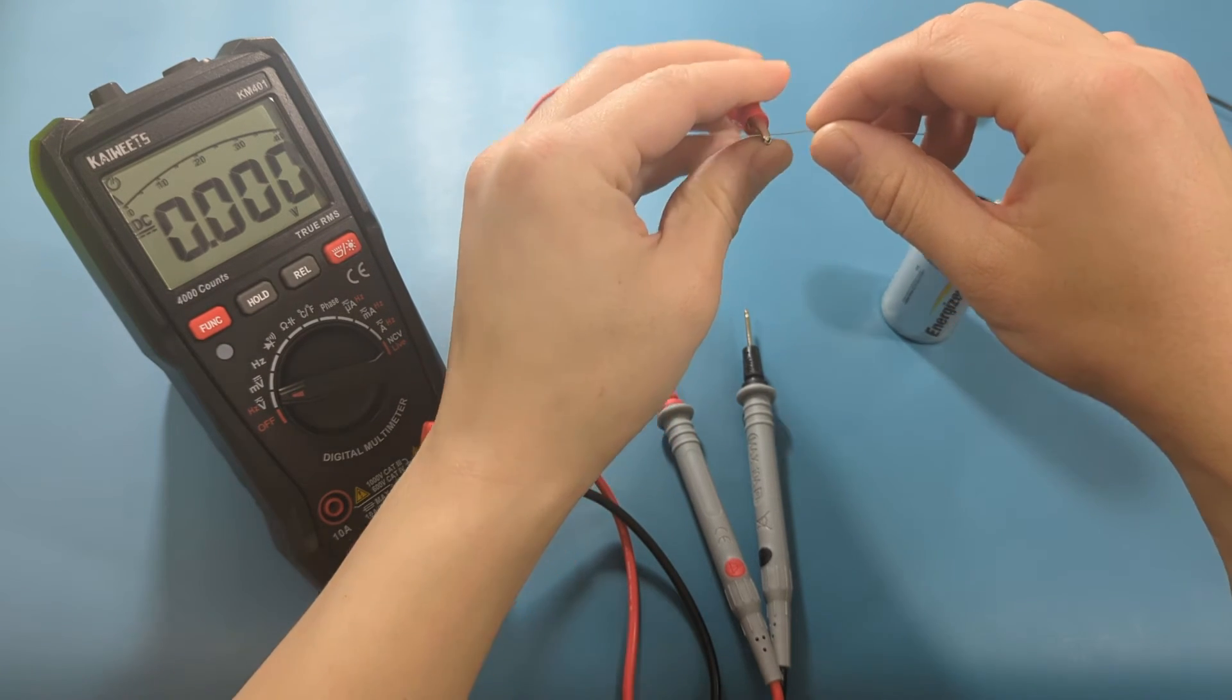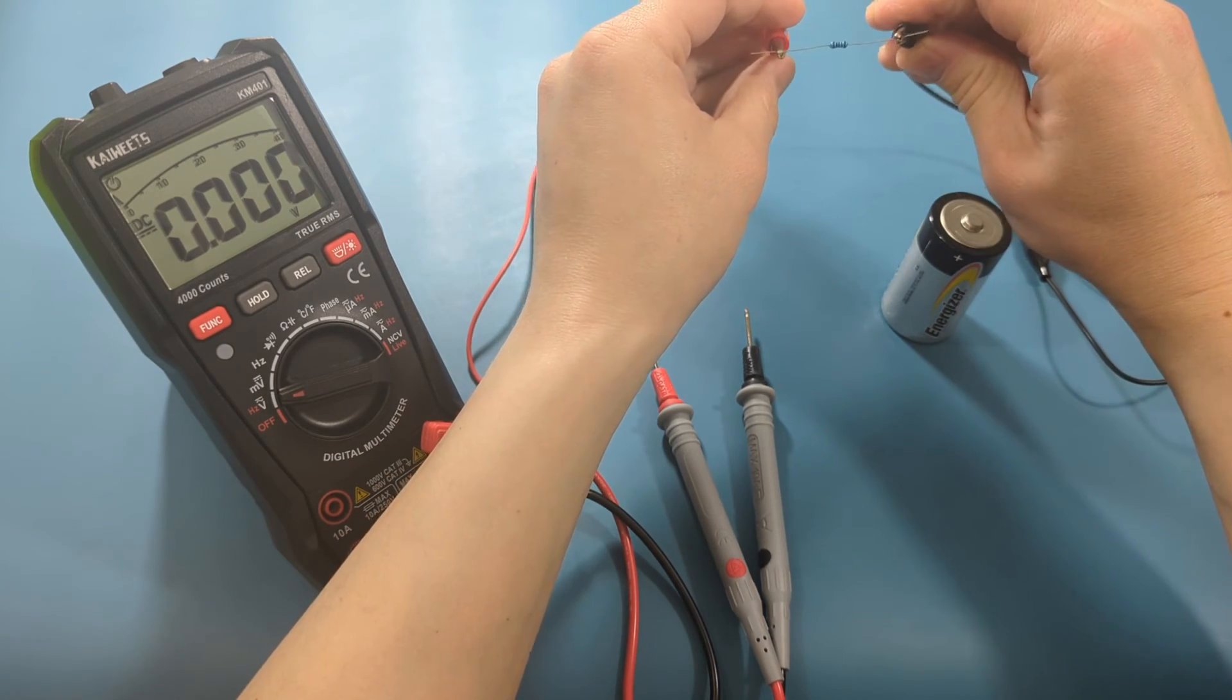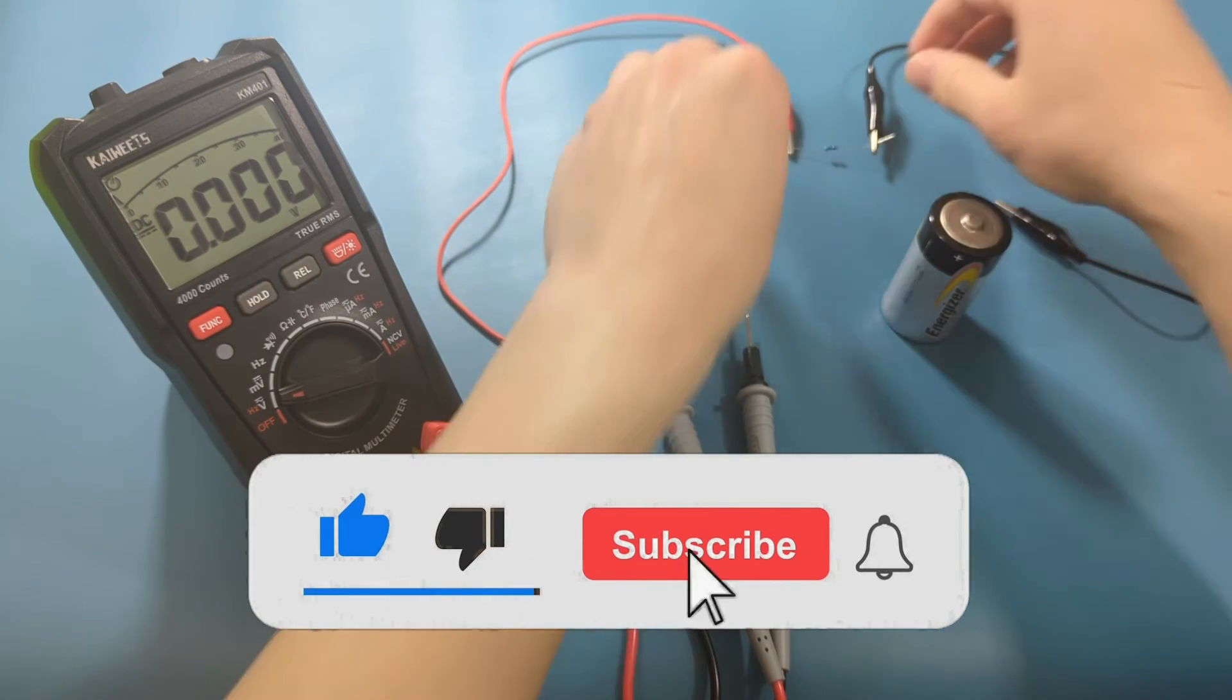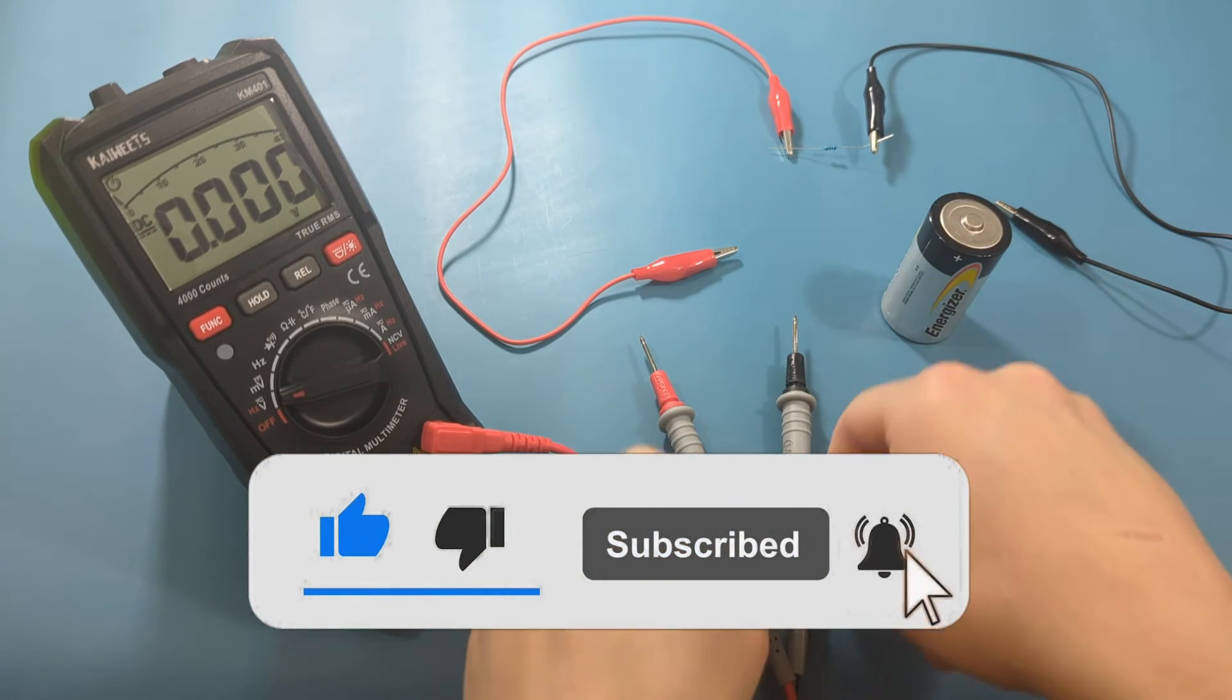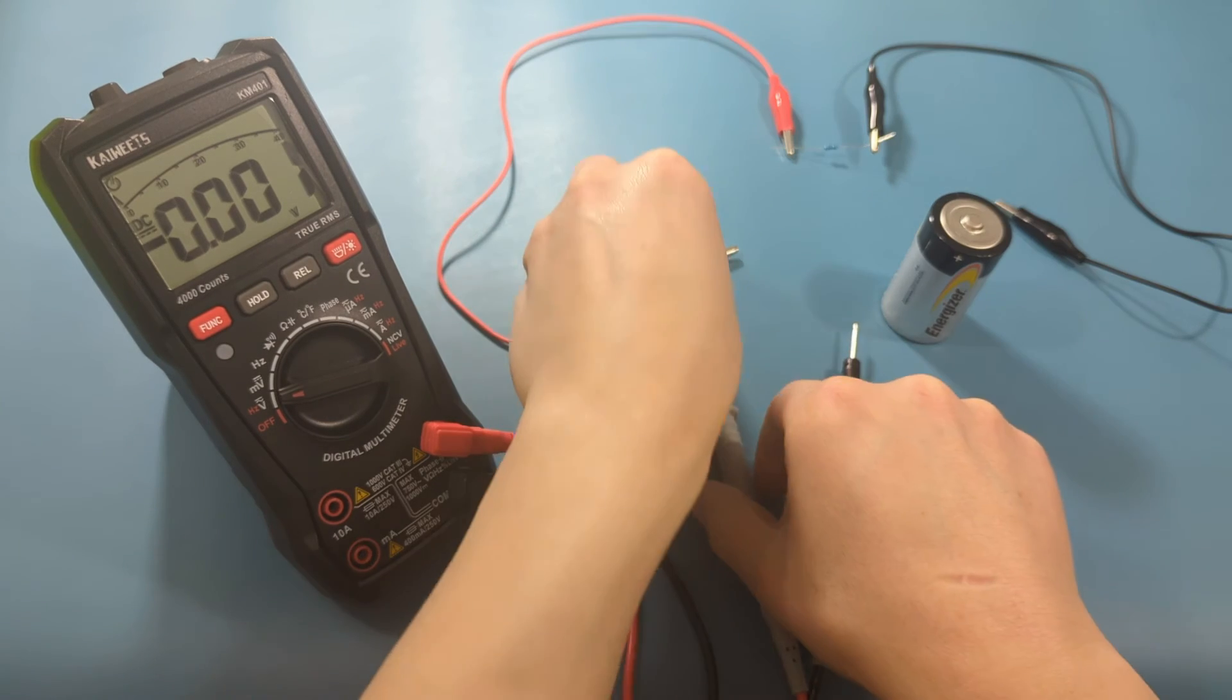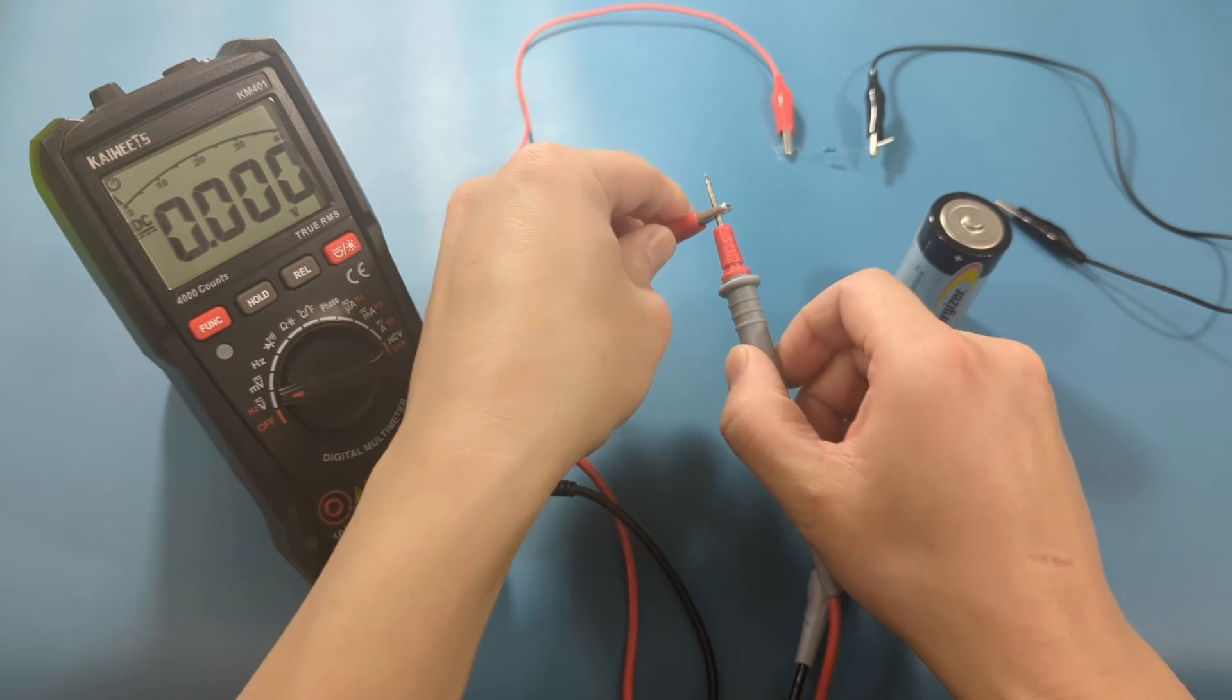Attach the alligator clips to the resistor. Attach the opposite end of the alligator clips to the probes.